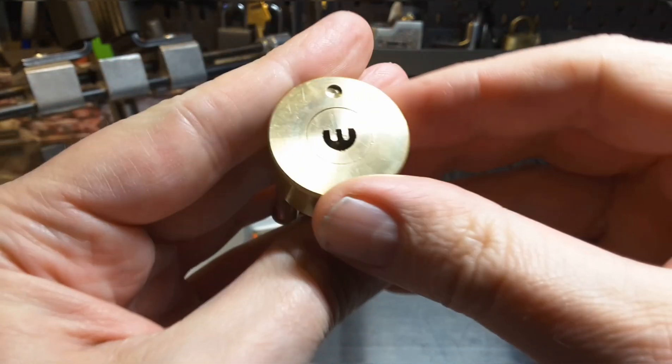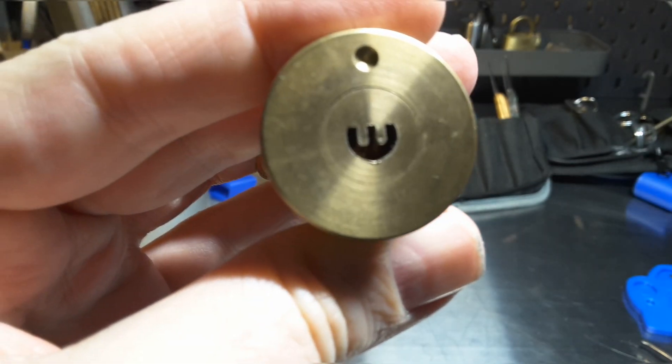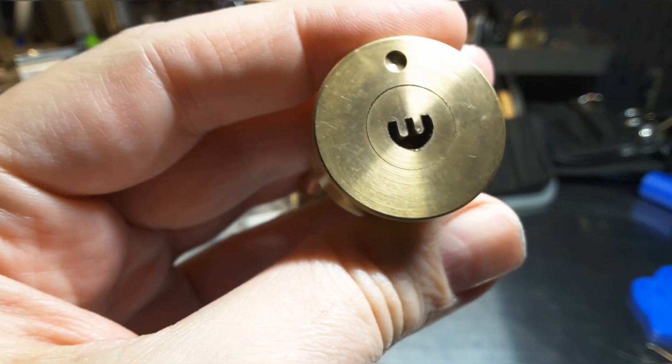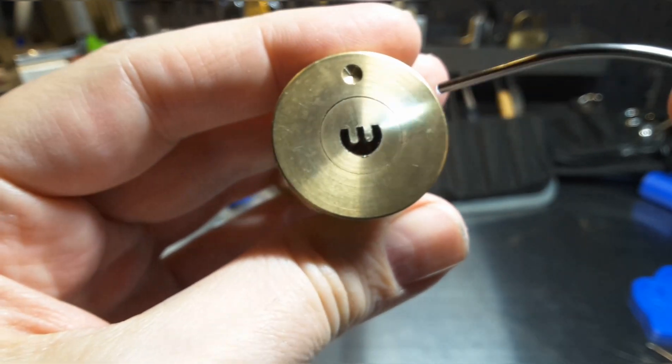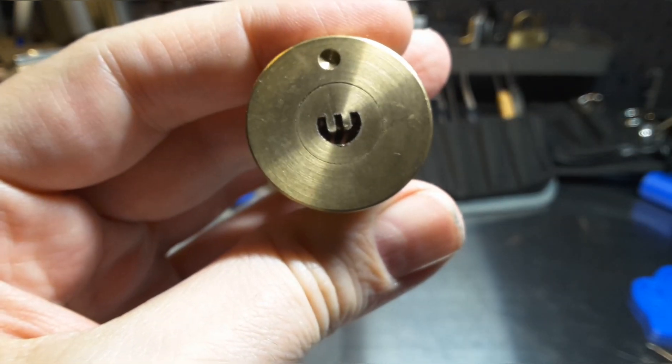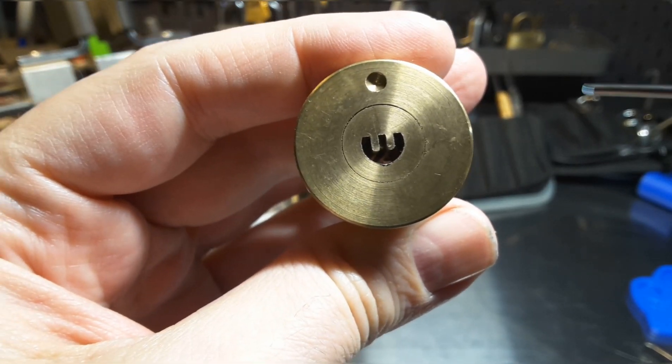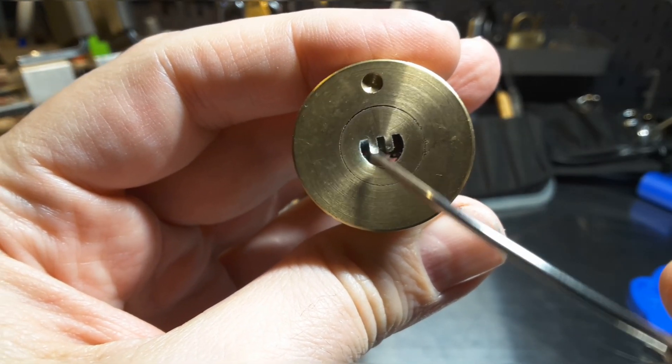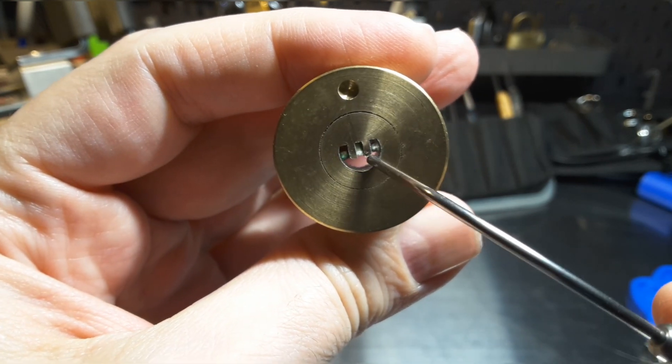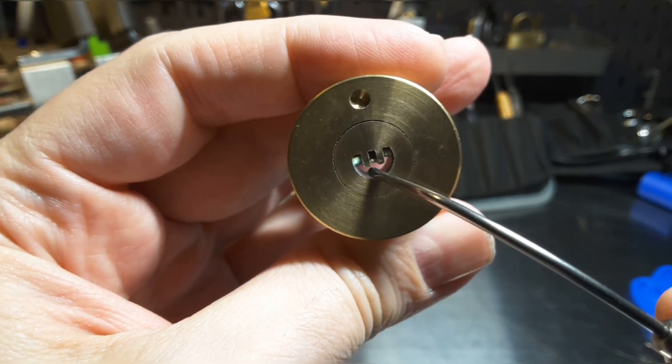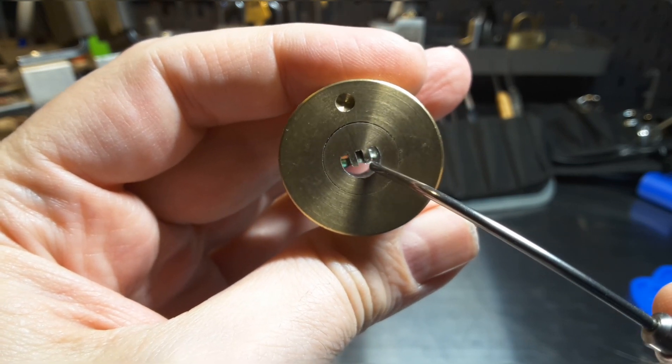And then I had a look inside of the keyway. Come on, flashlight. Focus. And you can see pins in the middle, and no pins at all on the left and right side.